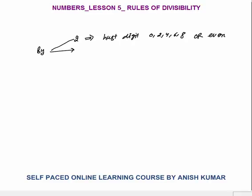What is the Rule of Divisibility by 4? The last two digits of a number must be divisible by 4, then only the number is divisible by 4. If the last two digits of any number are not divisible by 4, then you can say that number is not divisible by 4.